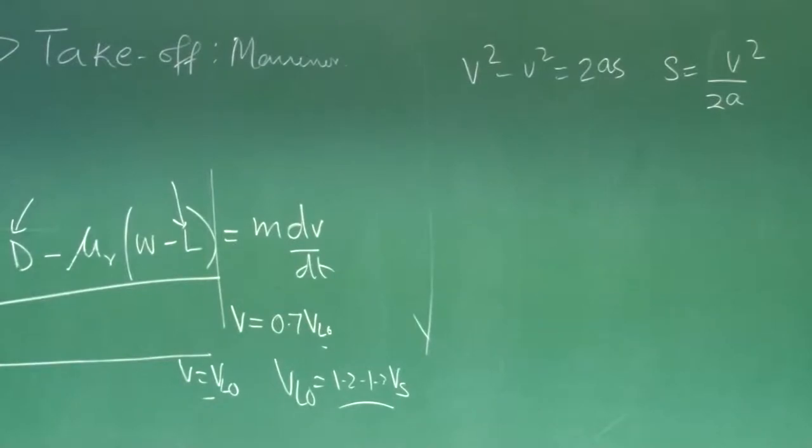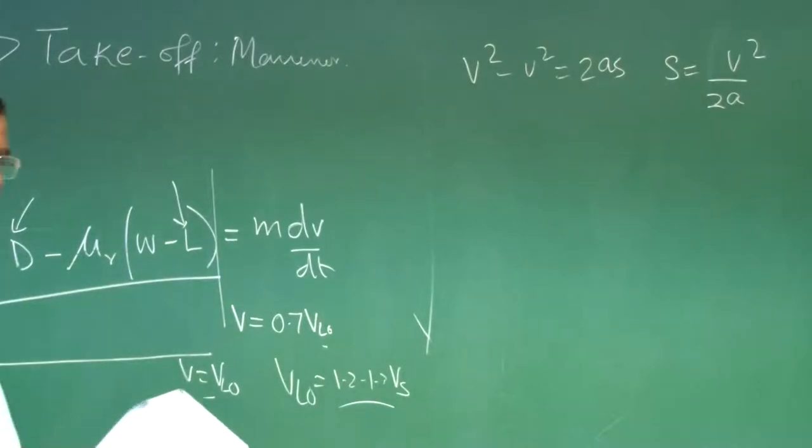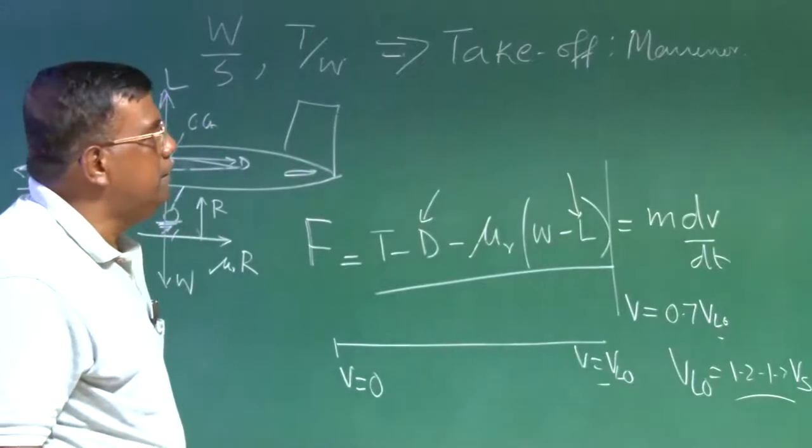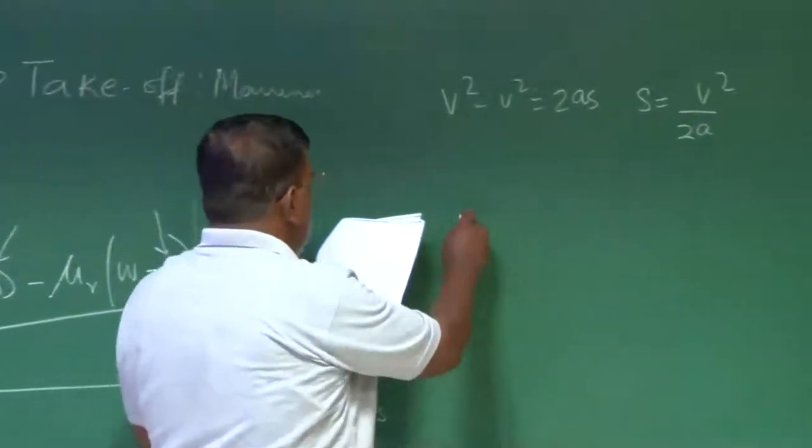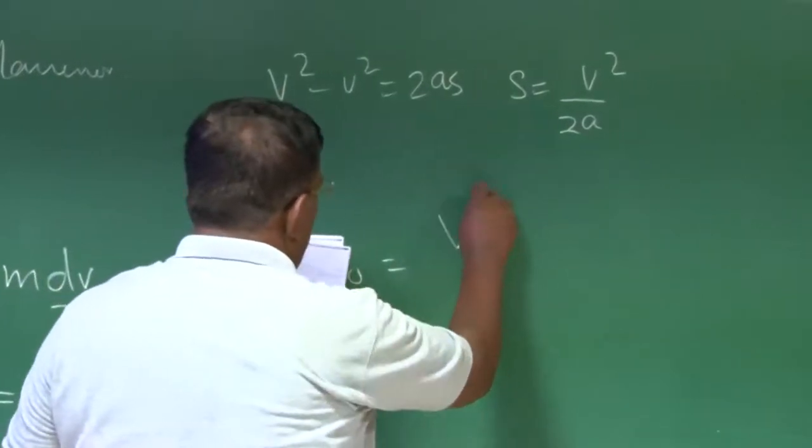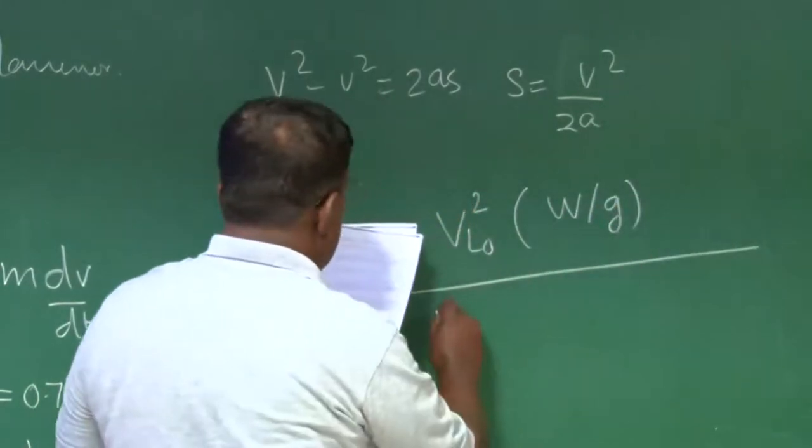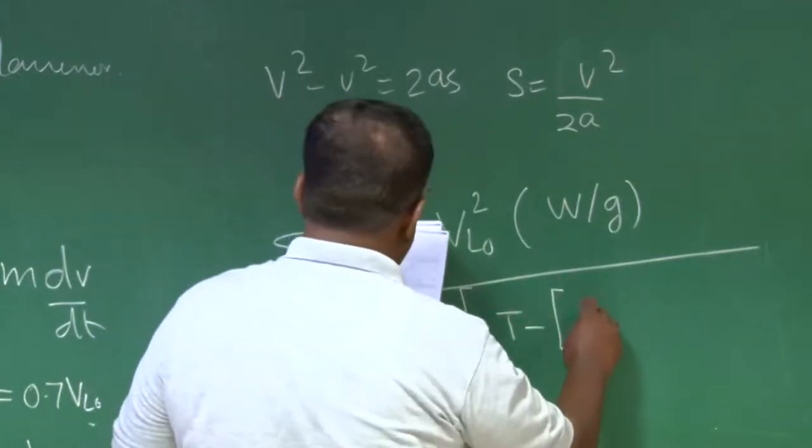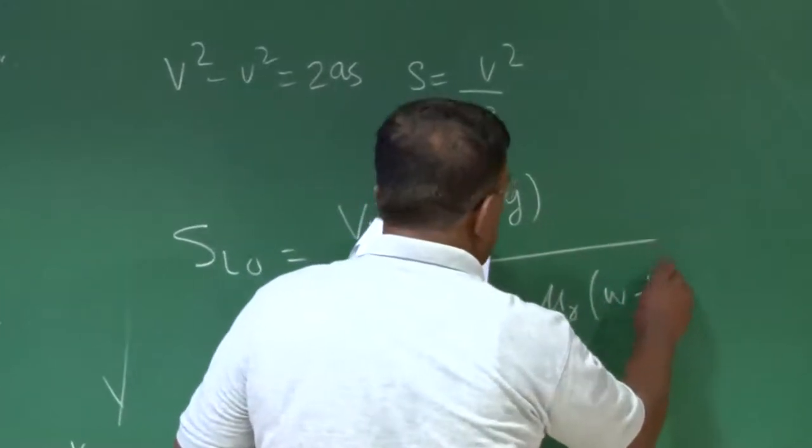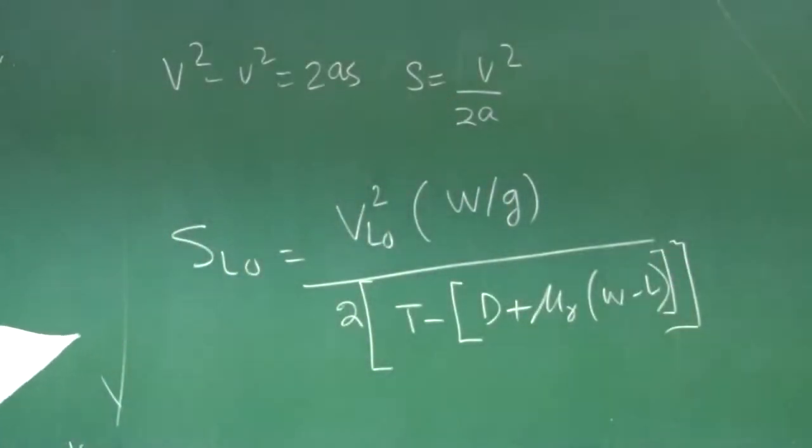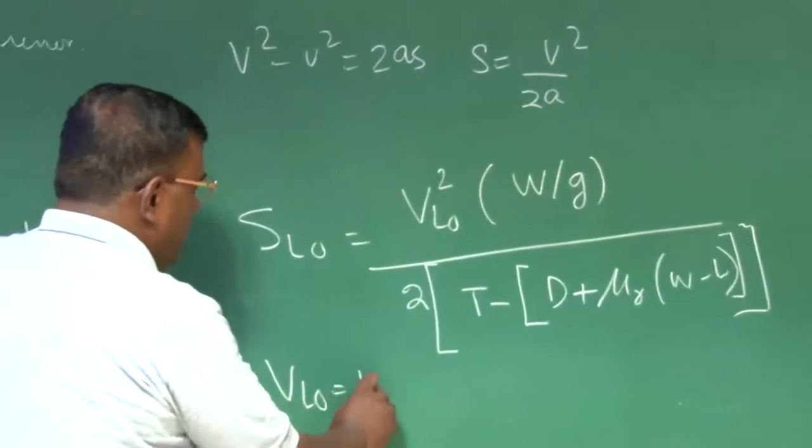This is nothing new I am telling, I am just revising whatever we have done in performance. So if I use this concept that I can take this acceleration evaluated at 0.7V lift off and use the concept of average acceleration. So dv by dt will be this force divided by m and S equal to V square by 2A, where A is basically this force divided by mass evaluated at 0.7V lift off. And we know V lift off, we can take 1.2 to 1.3V stall.